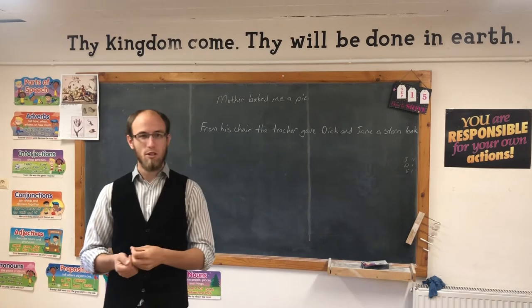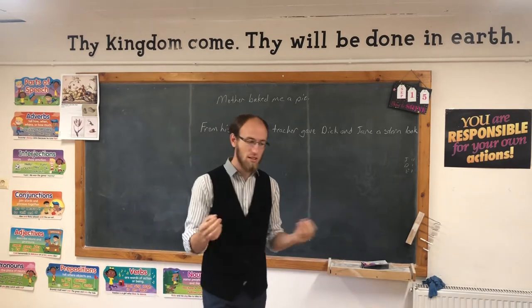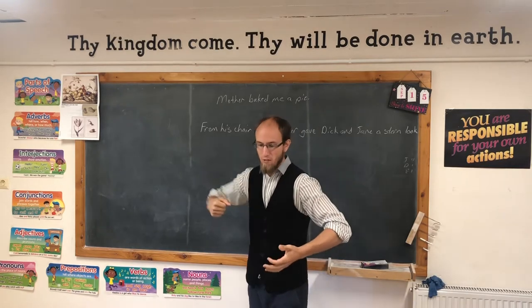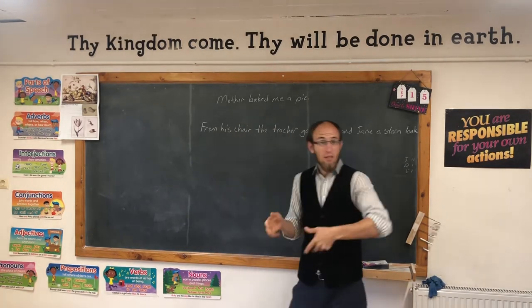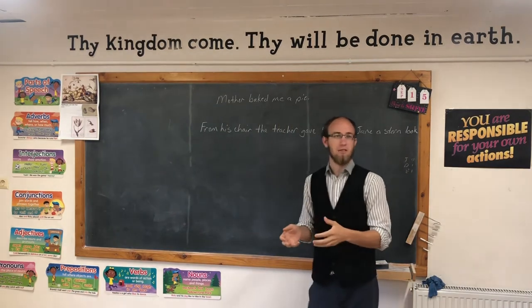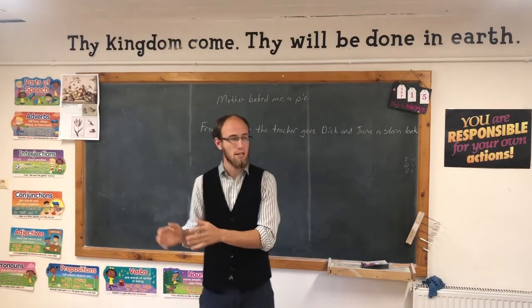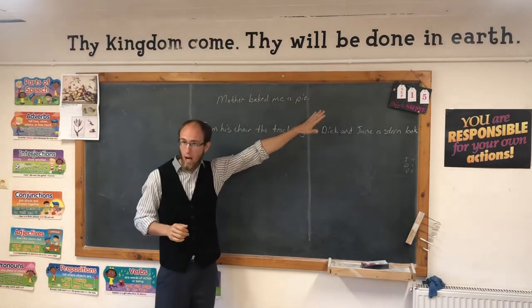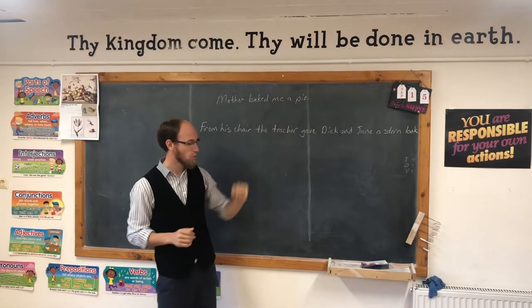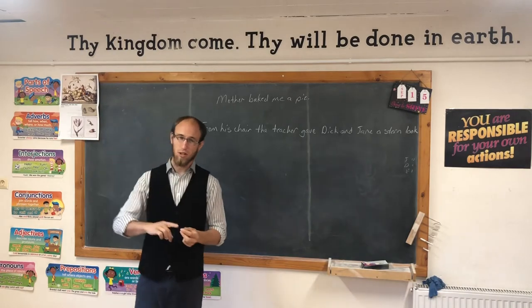Do you remember the sentence from yesterday? 'Mother baked a pie.' That's a perfect sentence for direct objects. Now today, we're going to talk about indirect objects. This is something that doesn't actually receive the action of the verb, but it receives the direct object. It doesn't receive the action of being kicked, but it receives the ball—the direct object. The pie receives the action of being baked, but our sentence today is 'Mother baked me a pie.' Me is not receiving being baked, but it's receiving the actual pie.